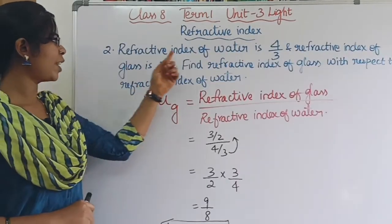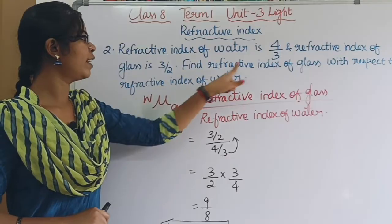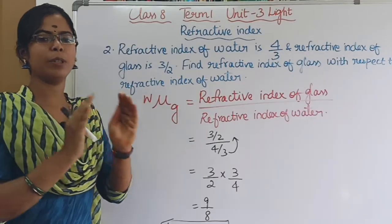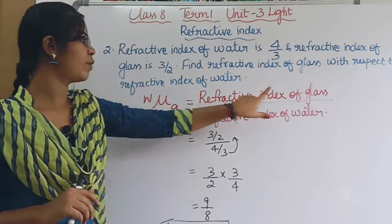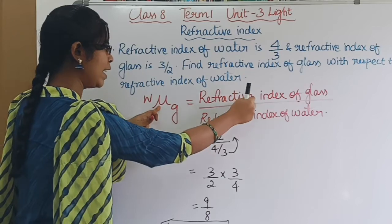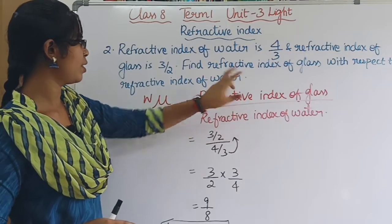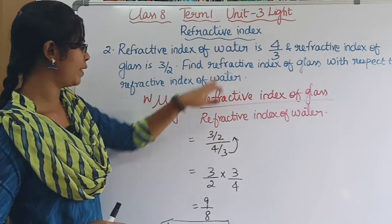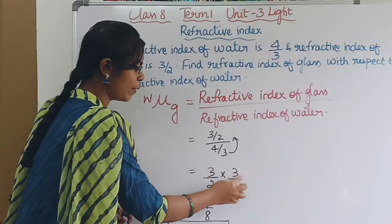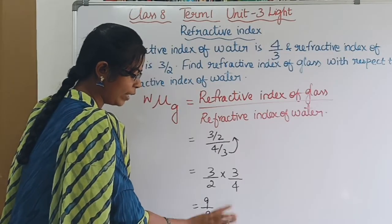Problem 2: The refractive index of water is 4/3 and the refractive index of glass is 3/2. Find the refractive index of glass with respect to water. Using the relative refractive index formula — refractive index of glass divided by refractive index of water — that is (3/2) divided by (4/3), which equals (3/2) × (3/4), giving 9/8 = 1.125. The answer is 1.125.